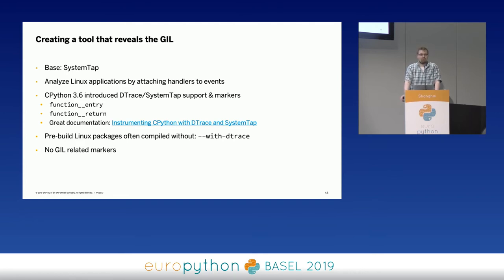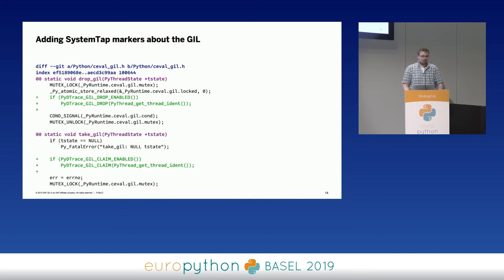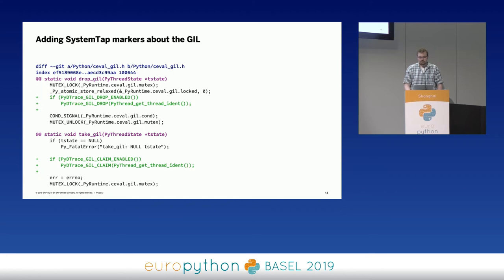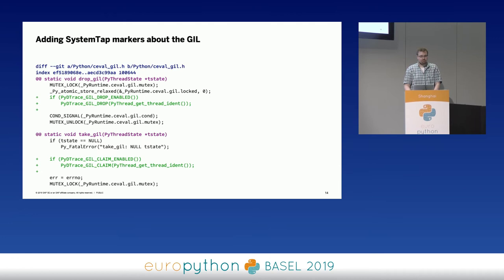But especially the GIL part was not so complicated to implement. This is just one part of the patch that introduced some markers regarding the GIL. Every time a thread drops the GIL, it emits an event, and every time a thread tries to claim the GIL, it also emits an event. We can also add arbitrary attributes to these markers, which are then accessible in SystemTap. In that case, I'm using the thread ID so I have an understanding of which thread is performing this action.